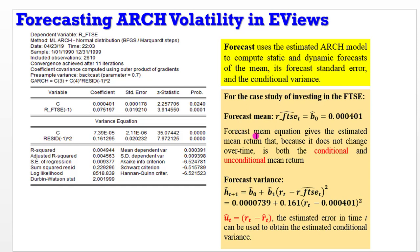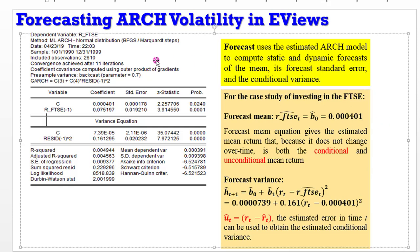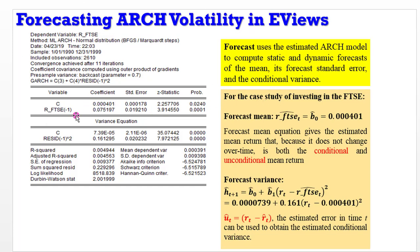This is because the forecast mean equation gives the estimated mean return. And because it does not change over time, it is both the conditional and unconditional mean return. So after estimating your ARCH model, you can easily generate the forecast mean return by looking at the value or the coefficient of the constant term.